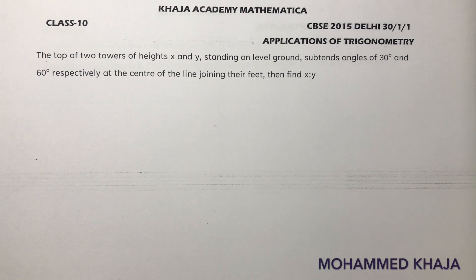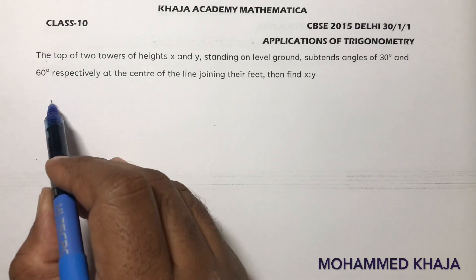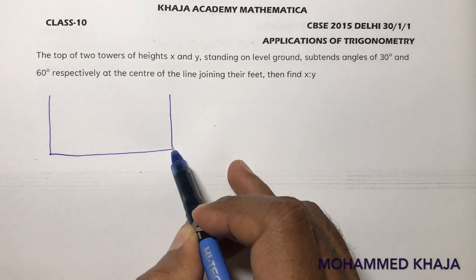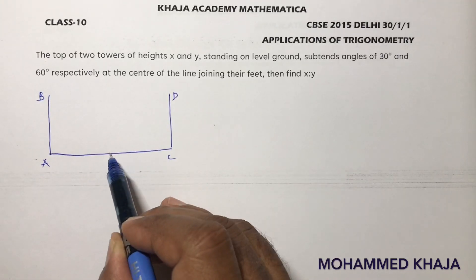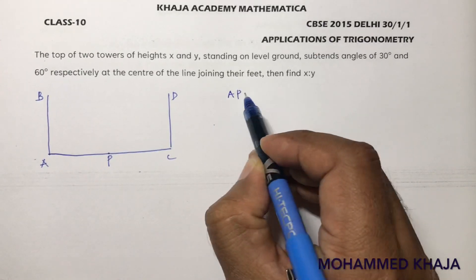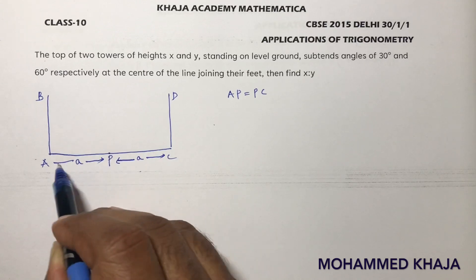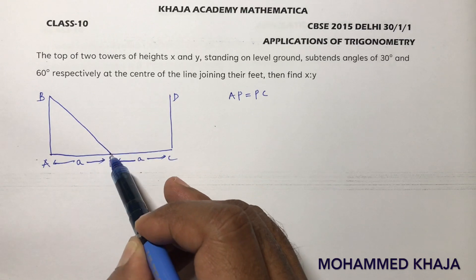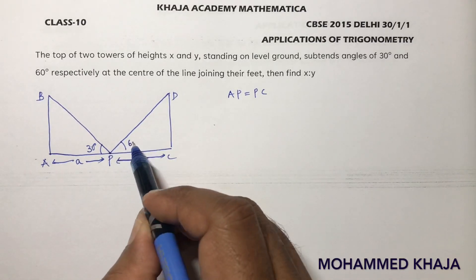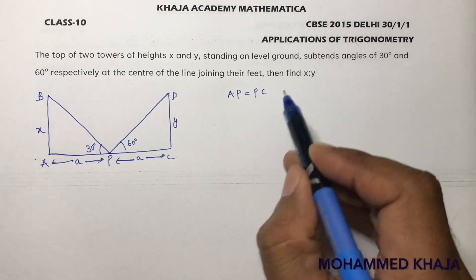This is a Class 10 applications of trigonometry important problem asked in the CBSE 2015 paper. There are two towers AB and CD of heights x and y standing on level ground. The tops of both towers subtend angles of 30 and 60 degrees respectively at point P, the midpoint of the line joining their bases. So AP equals PC, both equal to A. We need to find the ratio x to y.